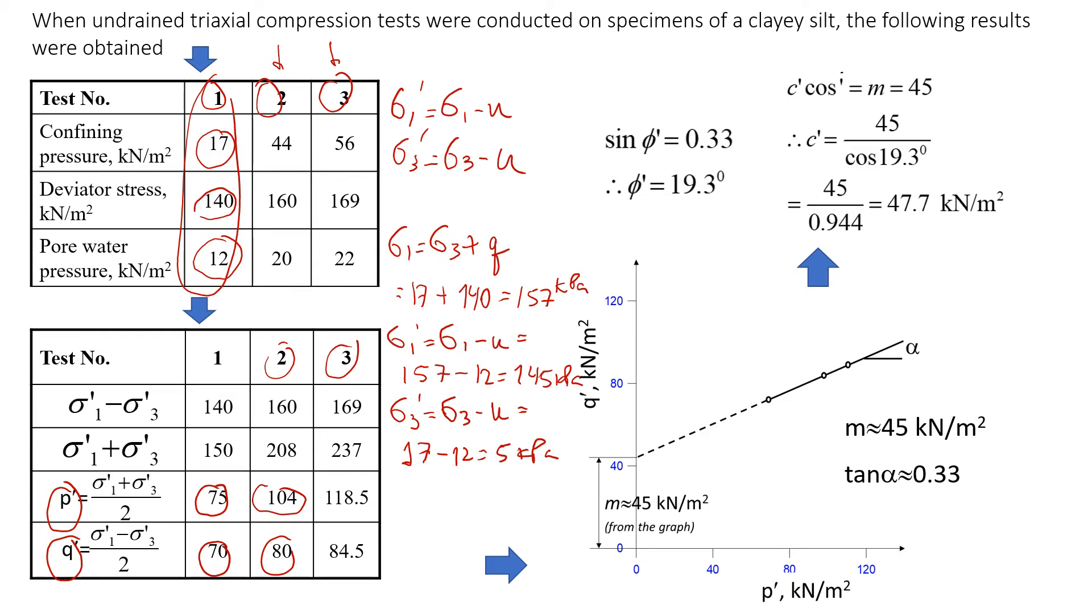Now let's find this parameter p dash. It's sigma 1 dash plus sigma 3 dash. In this case it's 145 plus 5 divided by 2. It's going to give us 75.